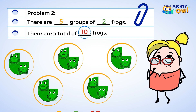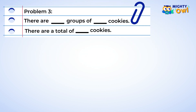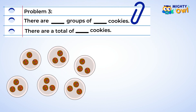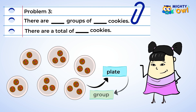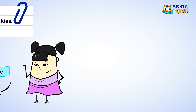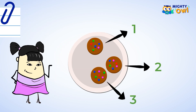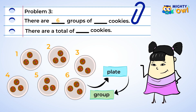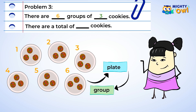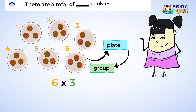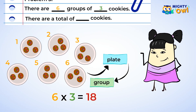You can practice multiplication as groups now. Here is a practice problem for you to try. This problem has plates of cookies. Each plate is a group. You count and see that there are six groups. This goes in the first blank. Next, you want to find out how many cookies are on each plate. There are three cookies on each plate. Three goes in the second blank. You have determined that there are six groups of three cookies. You can write this as a multiplication problem: six groups of three is six times three. You can use skip counting or adding to find that six times three is equal to eighteen.